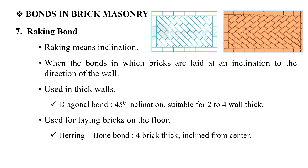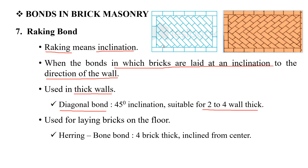The racking bond involves inclination in the wall direction — the inclined arrangement is similar to the brick bond, giving it the name racking bond. There are two types: diagonal bond, where the inclination is at 45 degrees. This is mostly suitable for a two-brick wall.